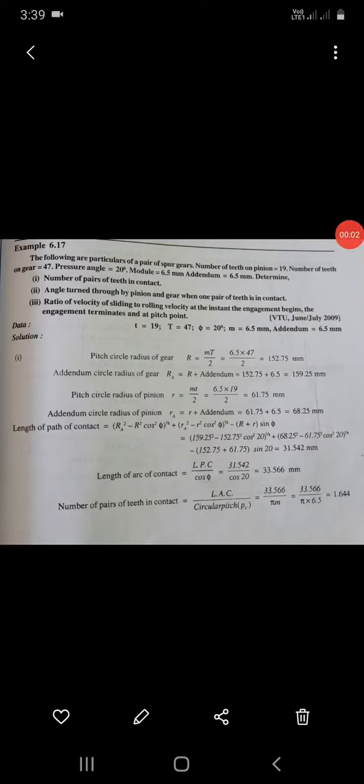This is problem 9, example 6.17: the following problem of spur gears. The number of teeth on pinion is 19, number of teeth on gear is 47, pressure angle is 30 degrees.